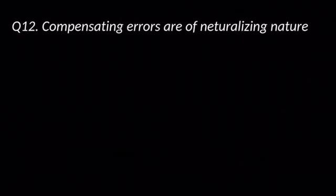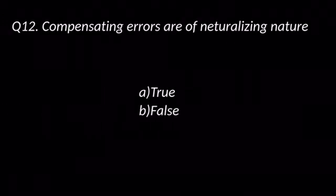Question number twelve: Compensating errors are of neutralizing nature — True or False? Options are: A. True, B. False. The answer is A: True.